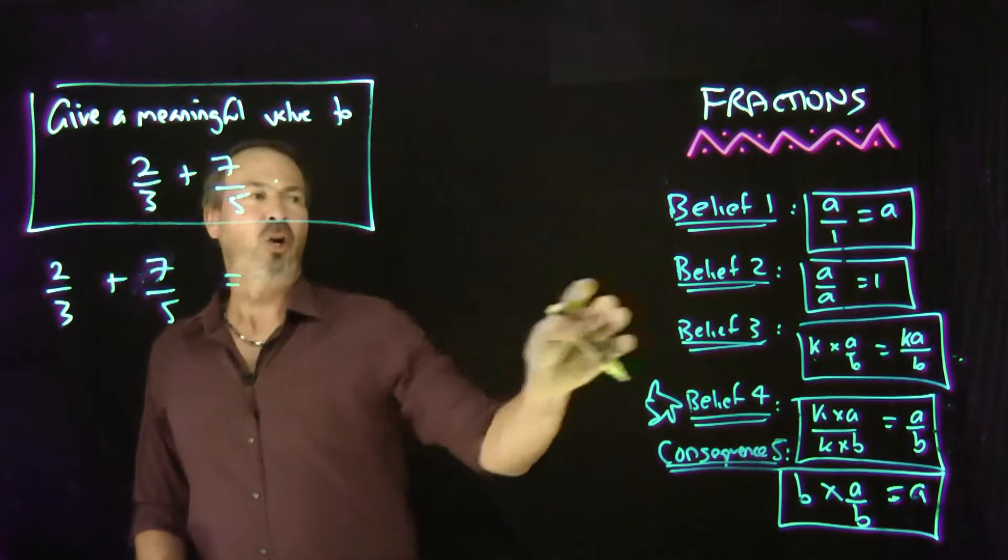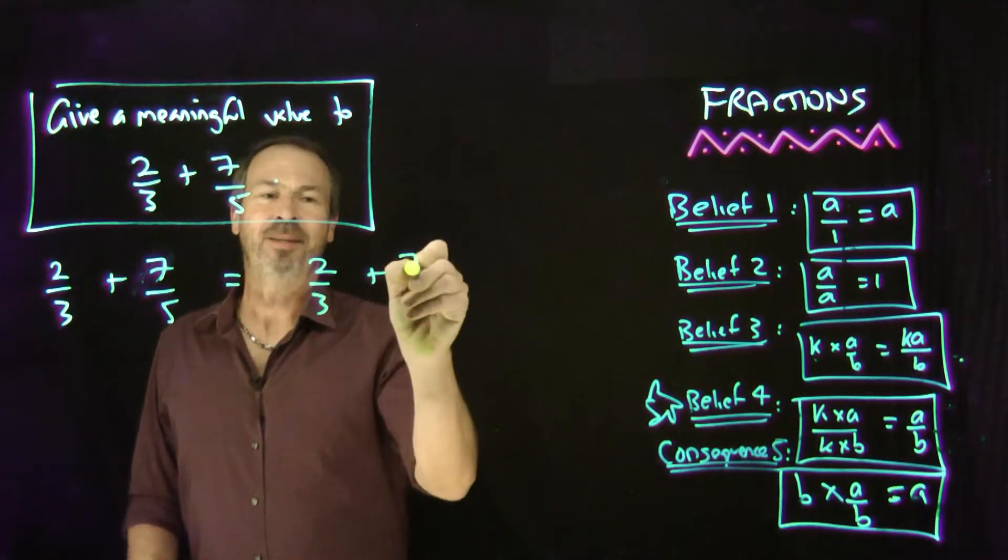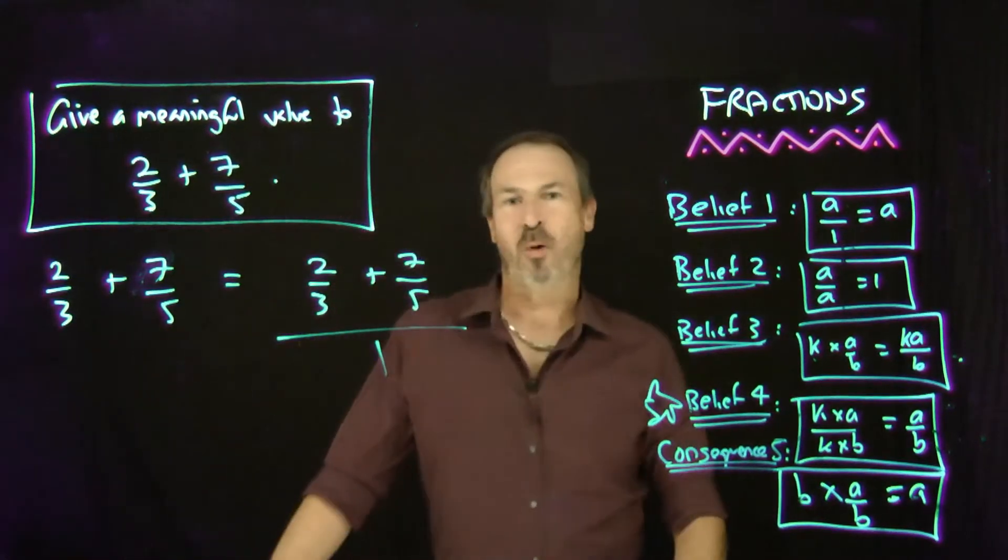By belief number 1, a quantity is the same as that quantity over 1. I'm going to do that right now. This is really the same as that by belief number 1.